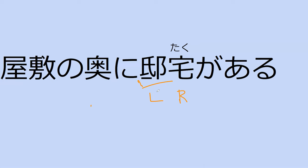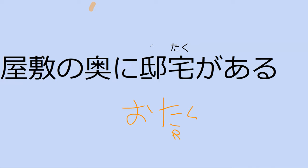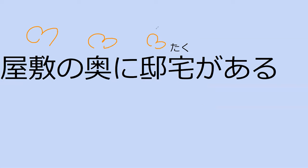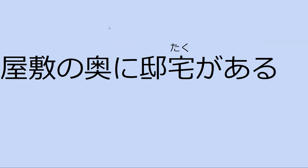'Kantei' is an official residence — so the prime minister's official residence is 'kantei.' That 'tei' is always there. And 'taku' — I've always thought oh yeah, it shows up in 'otaku,' like your house — the nerdy homebodies. 'Teitaku' is house, residence, mansion. What does this sentence say? 'Yashiki no oku ni teitaku ga aru' — it's saying that in the inner depths of the estate lies a mansion. Perfect — there is a mansion in the depths of the estate.